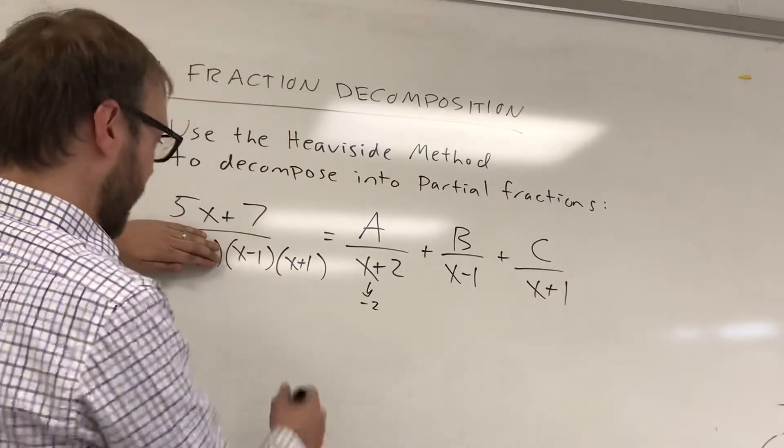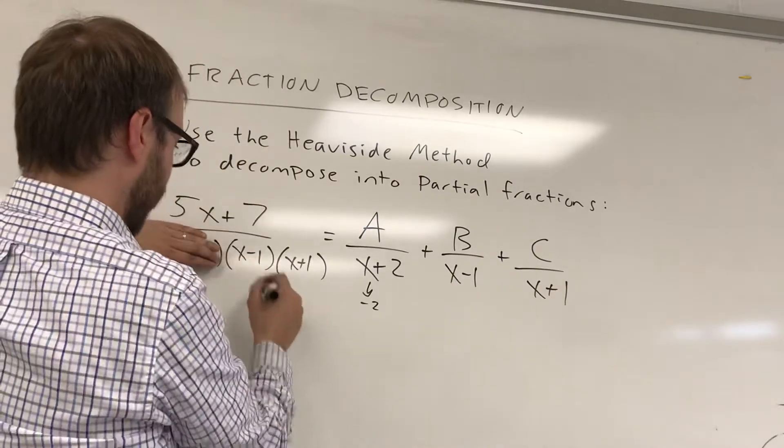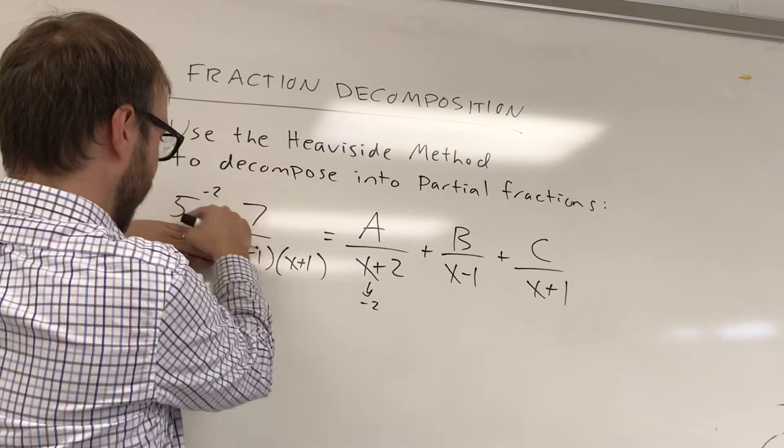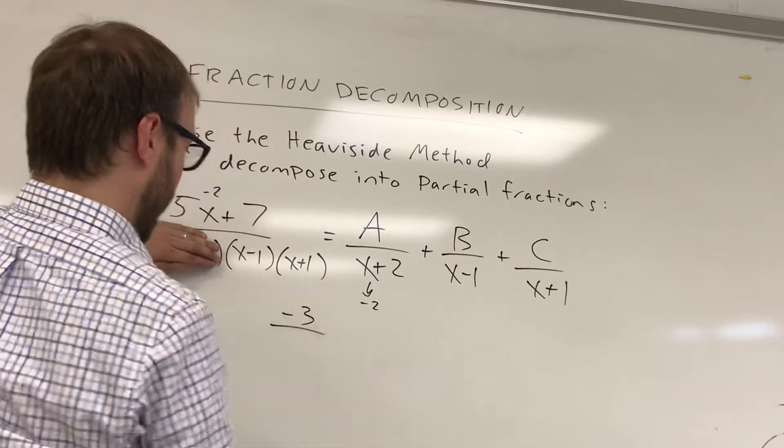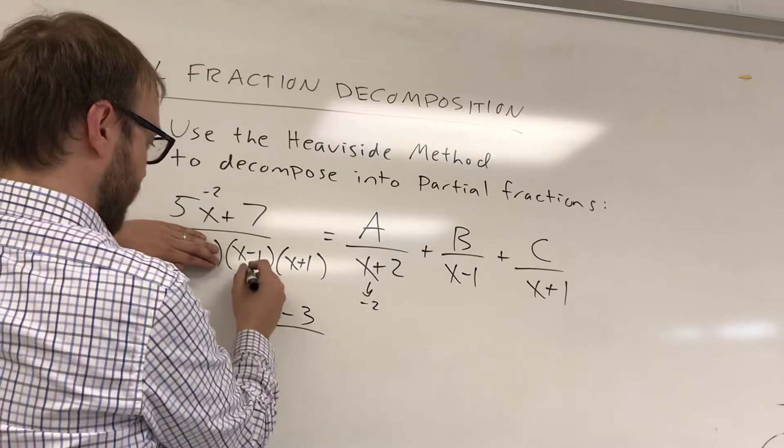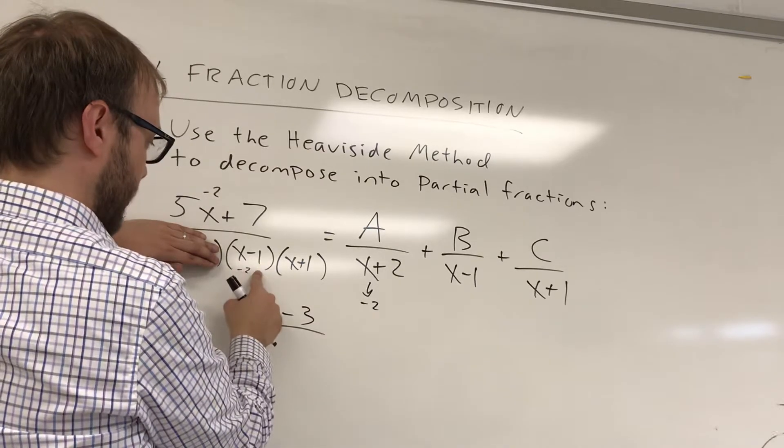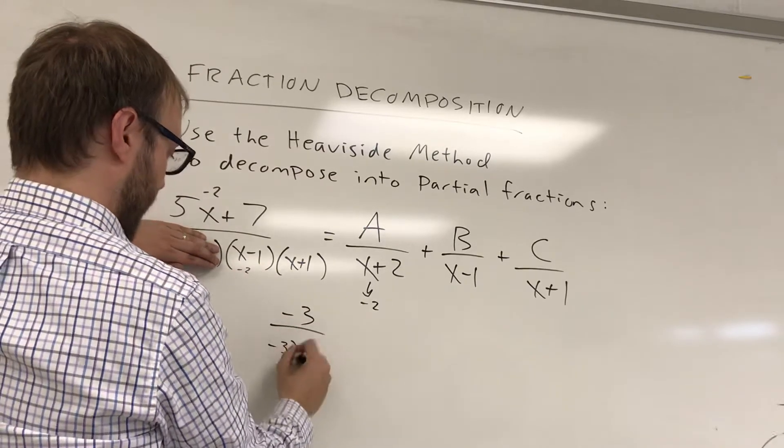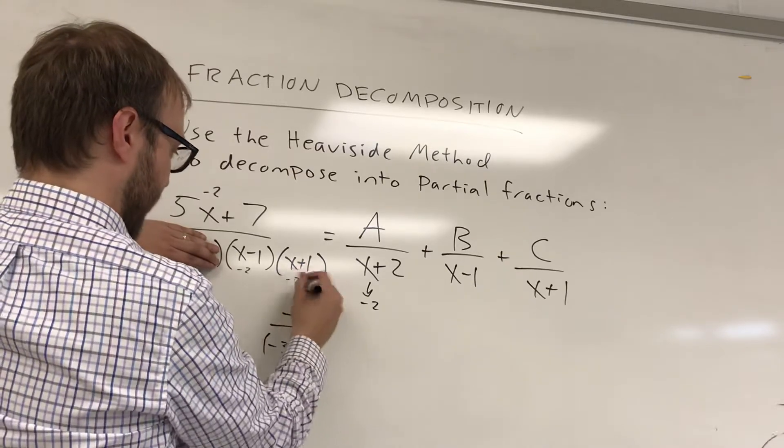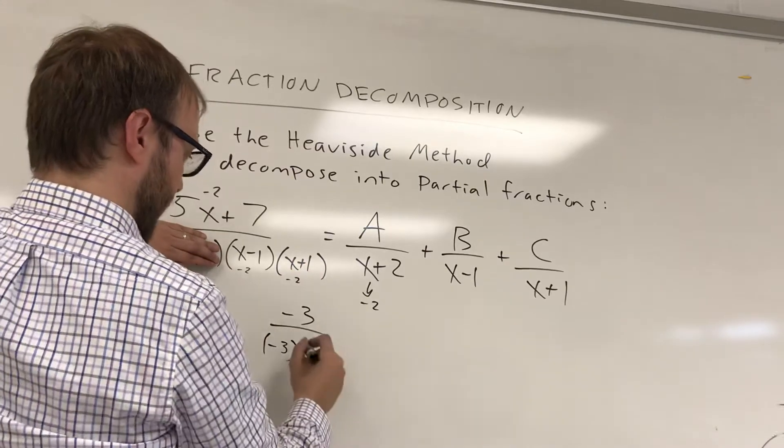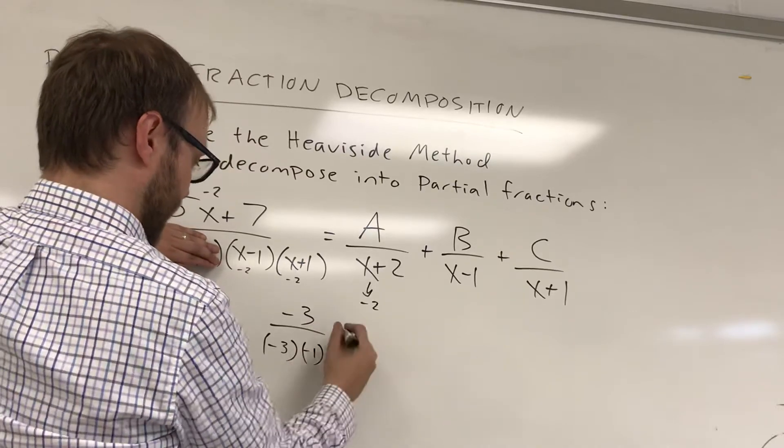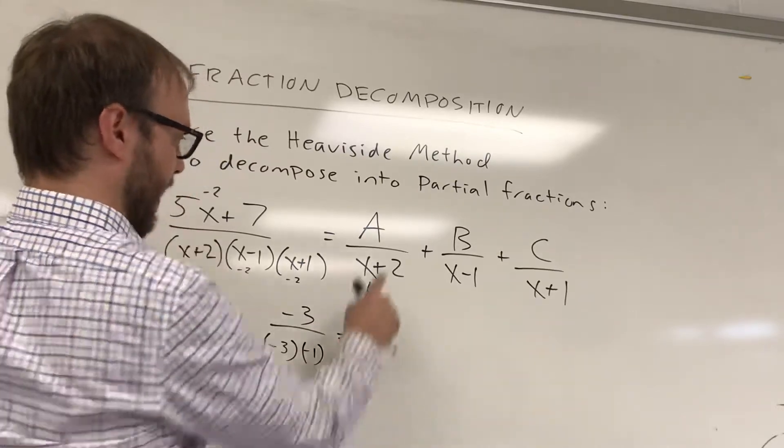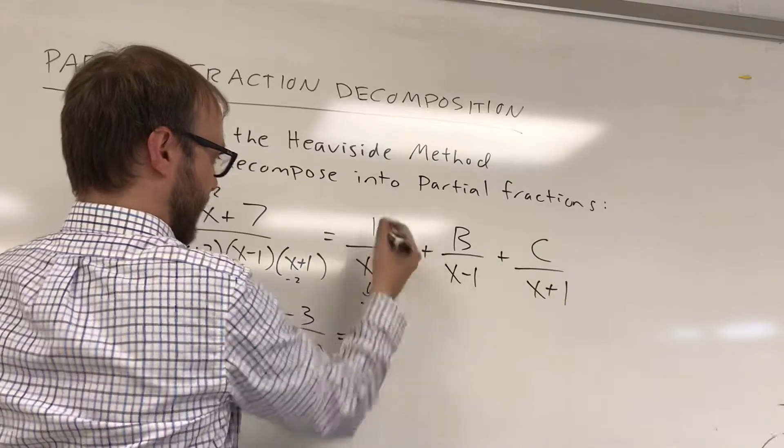So this one will be a little bit longer, but you're going to have 5 times negative 2, which is negative 10. Negative 10 plus 7 is negative 3. On the bottom, if you put a negative 2 here, negative 2 minus 2 is negative 4. And if you put a negative 2 here, negative 2 plus 1 is going to be negative 1. And so you get negative 3 over positive 3, which is equal to positive 1. So that's your A value. A is equal to 1.